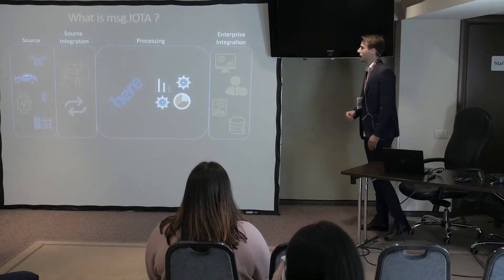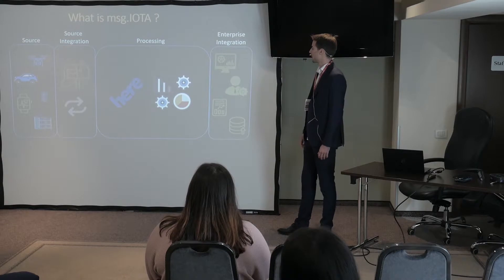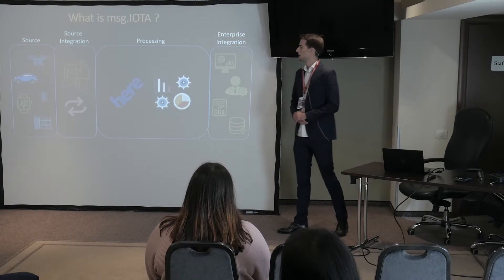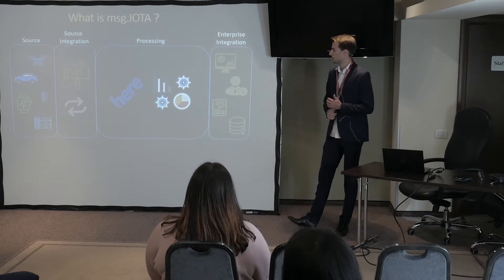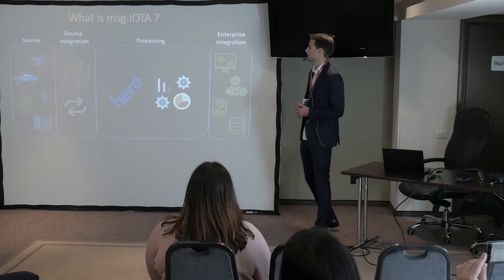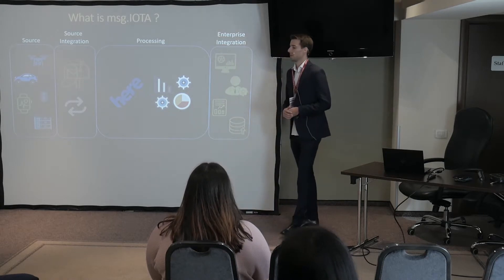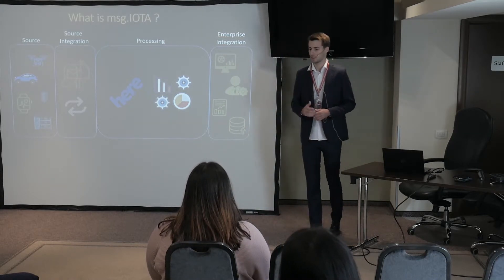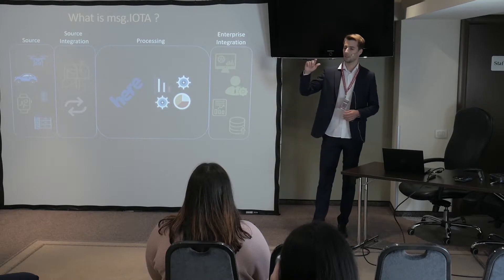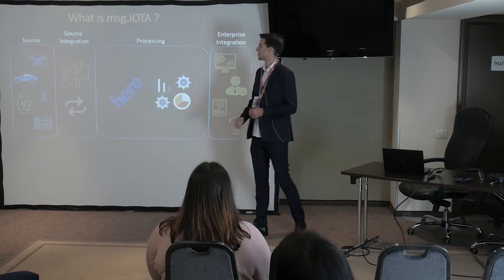Here is a functional picture of MSG IOTA. We have four functional modules. The first one is the source module that I already explained — we can collect data from drones, telematics, cars and other systems, and fitness trackers. After we collect data, we receive data in various formats, so we always have to adapt this format to one unique format used by IOTA.